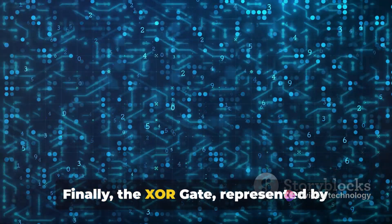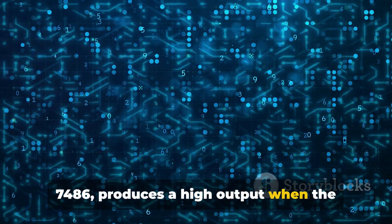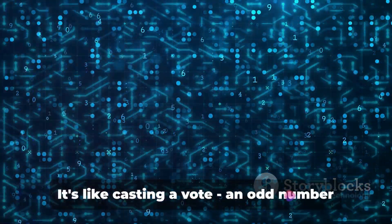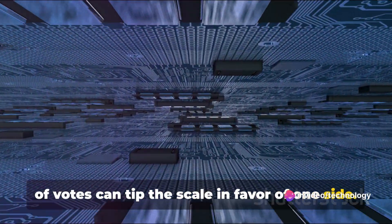Finally, the XOR gate, represented by 7486, produces a high output when the number of high inputs is odd. It's like casting a vote. An odd number of votes can tip the scale in favor of one side.